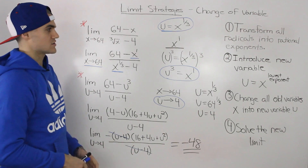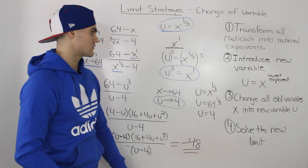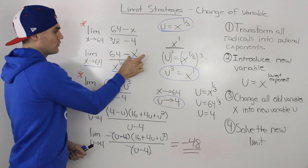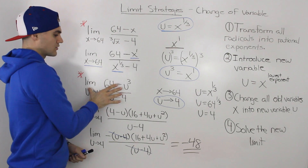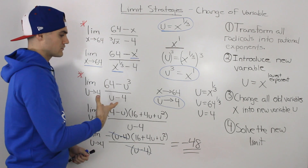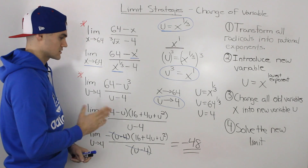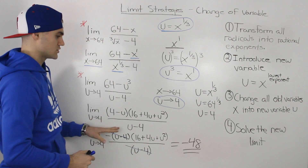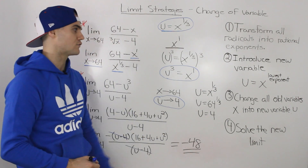Overall, it's not too bad — just follow the series of steps for the change of variable strategy. Make sure you have expressions in terms of the new variable u for all X variables, form your new limit, and then factor a sum or difference of cubes — that works about 90% of the time — to get your final answer of negative 48.